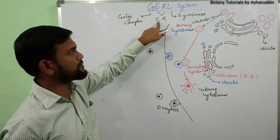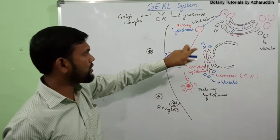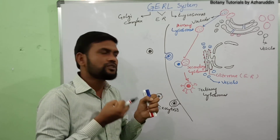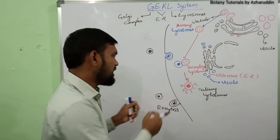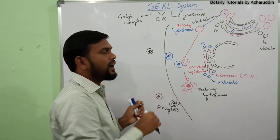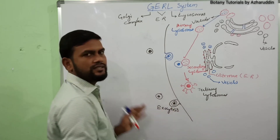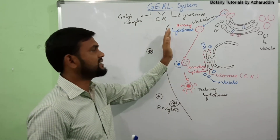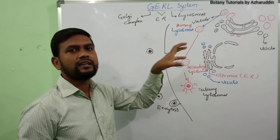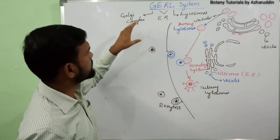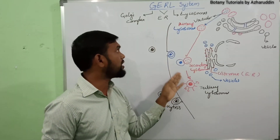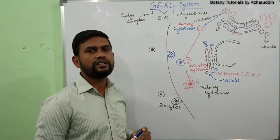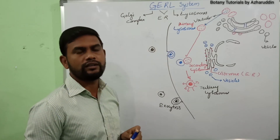The Golgi complex, endoplasmic reticulum, and lysosomes collectively work as the GERL system. They digest food material, are involved in the absorption of required minerals and nutrients, eliminate undigested food materials from the cell, and also maintain the size of the cell. These are the functions of the GERL system. In the next class, I will cover another cell organelle. Thank you.